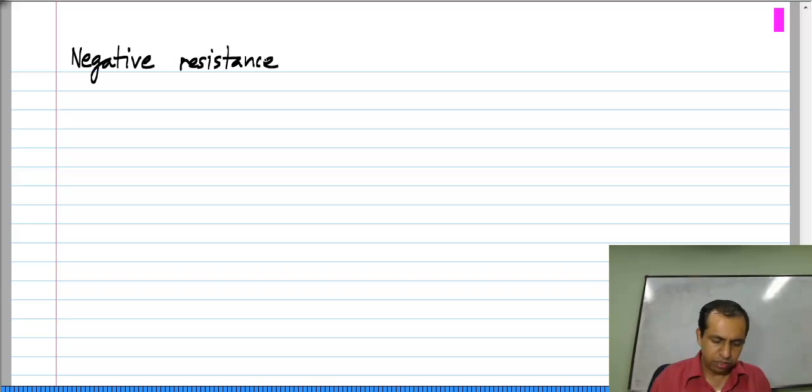In this lesson, we will look at another example circuit, which is to synthesize a negative resistance using an op amp. I will say negative resistance using Miller effect, and I will explain what that is.